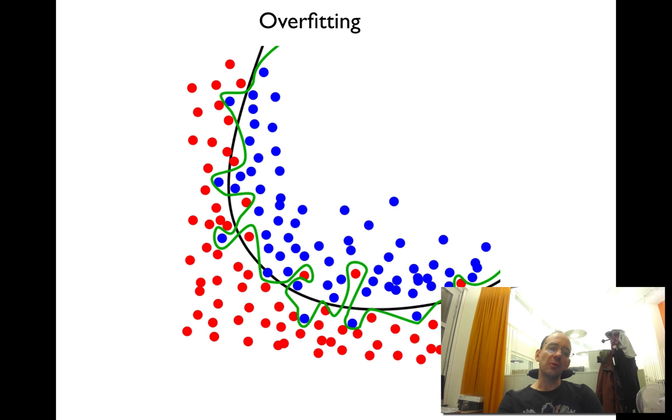Certainly the green line is much better at classifying the blue and red dots—it does a perfect job. On the other hand, if you add a new dot somewhere close to the border of the black line, do you really think it should be red or blue?